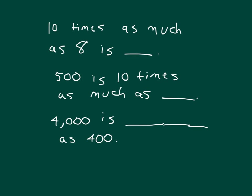Let's look at three more problems. We have 10 times as much as 8 is. So we have 8, and we have 10 times more than that. So each of those ones would be multiplied by 10, and 1 times 10 is 10. So we would have 8 tens, or 8 tens is also worth what? 80. Let's write in 80 there. 10 times as much as 8 is 80.